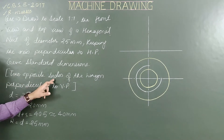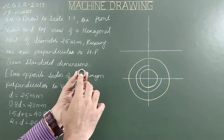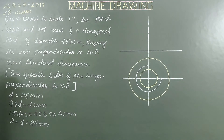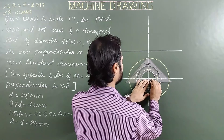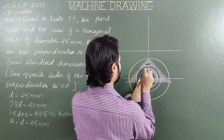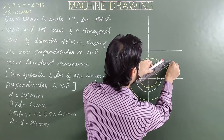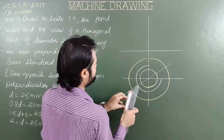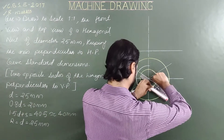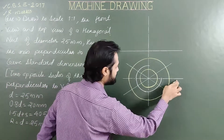Now for the hexagon, two opposite sides are perpendicular to VP. So we start from these two sides. Mark equal angles of 30° from the XY line or from the center line. Draw lines at an angle of 30° from the center of the top view. These are two helping lines at an angle of 30° from the central horizontal axis.